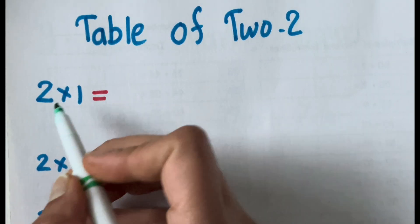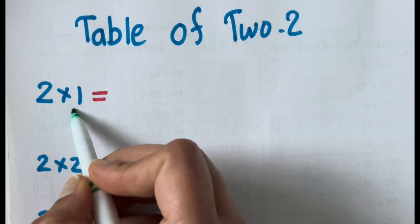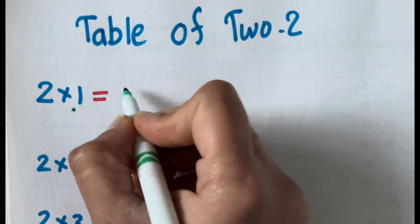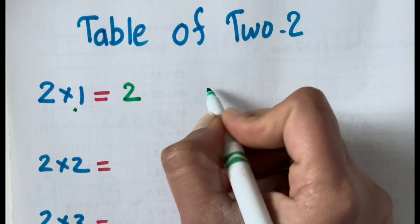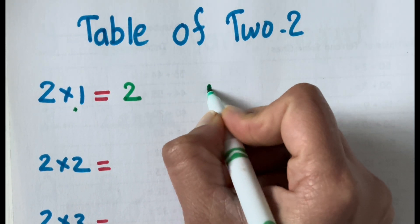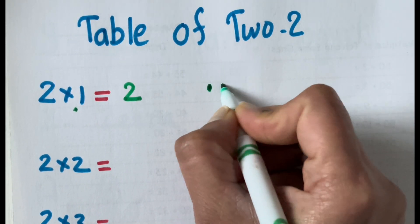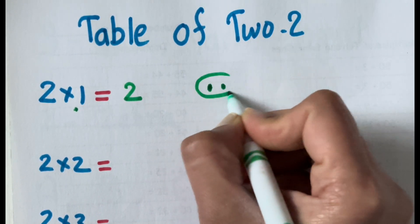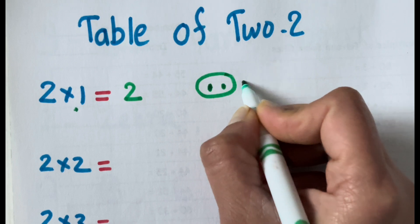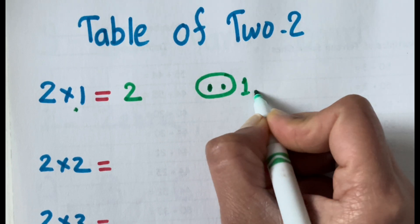Slant table of 2. 2 times 1 is 2. That means a group of 2 — 1 group of 2.